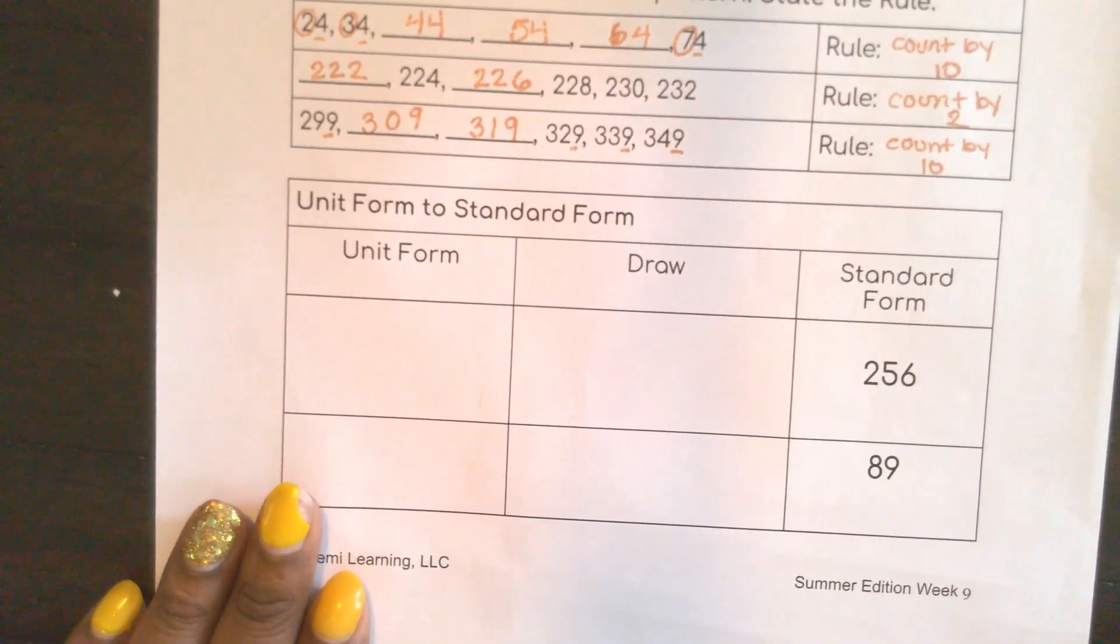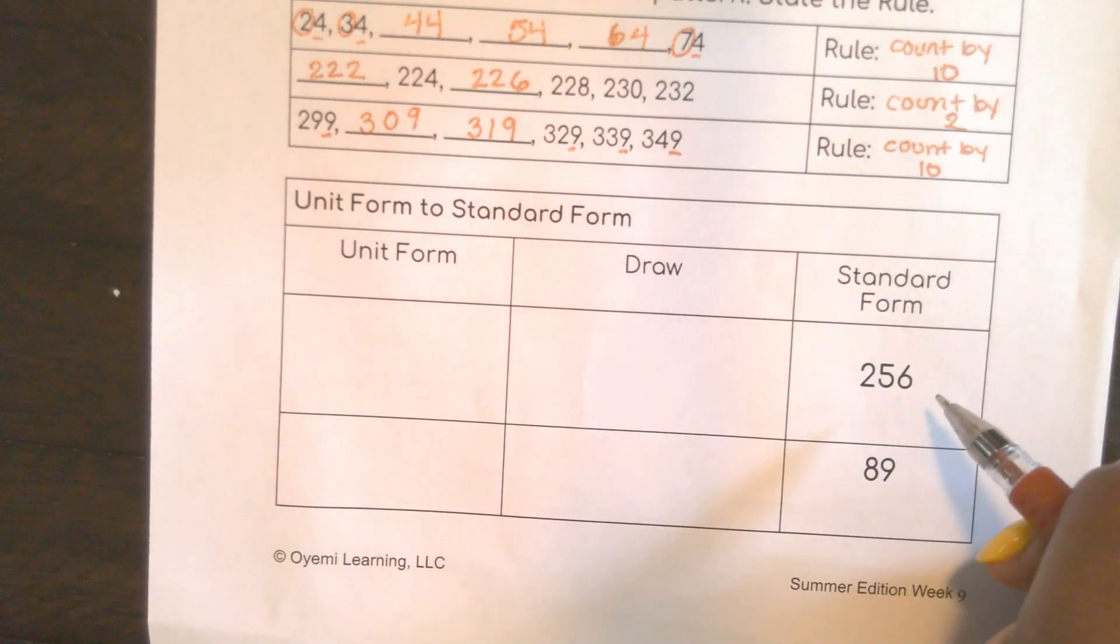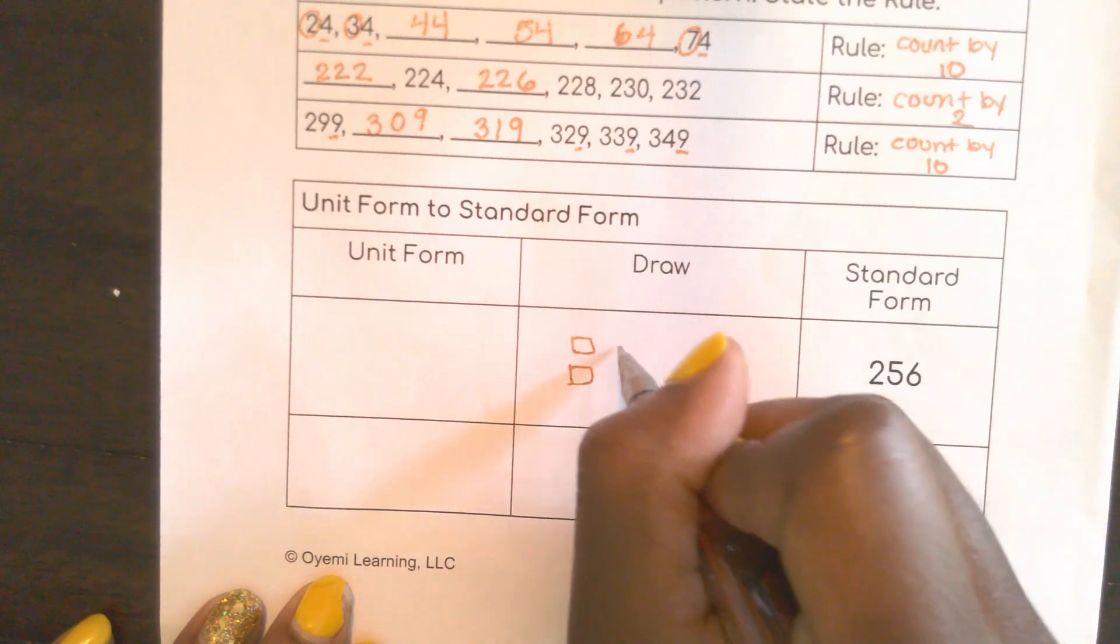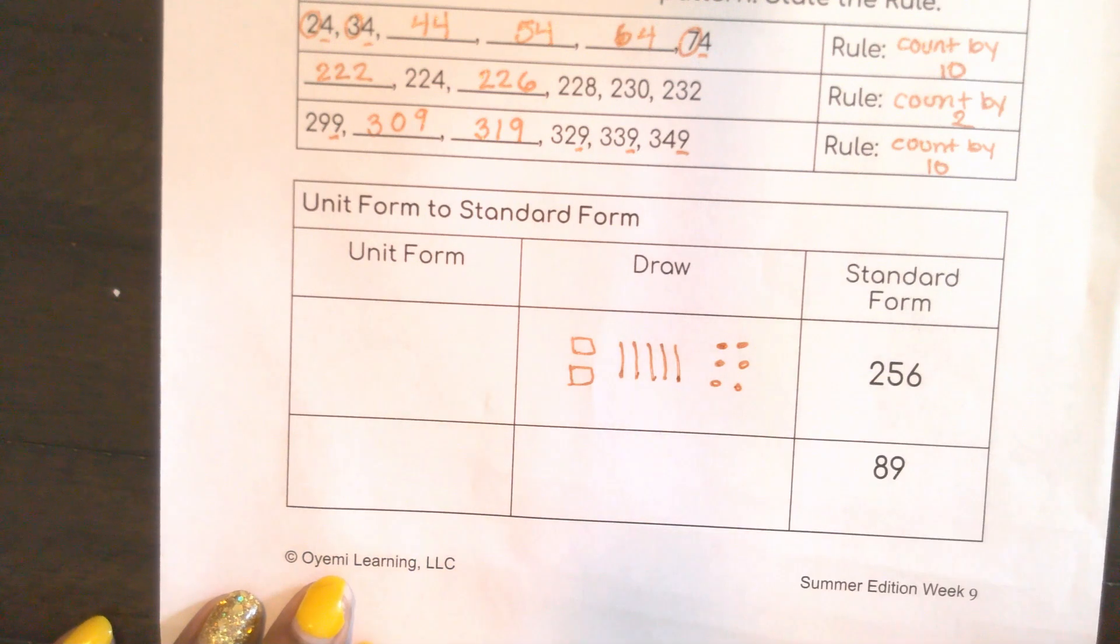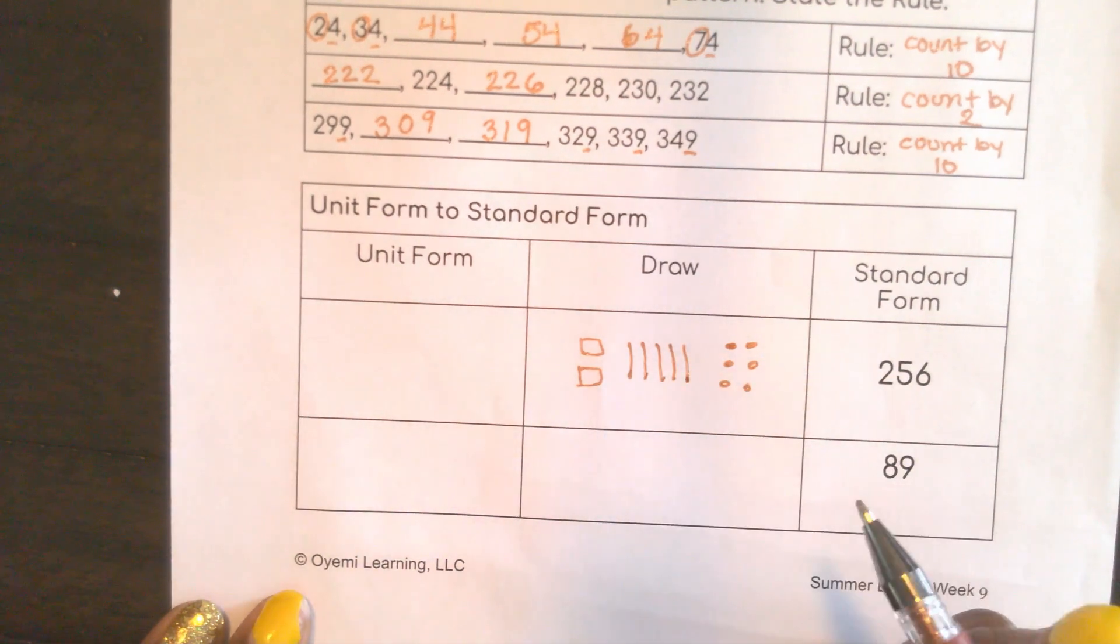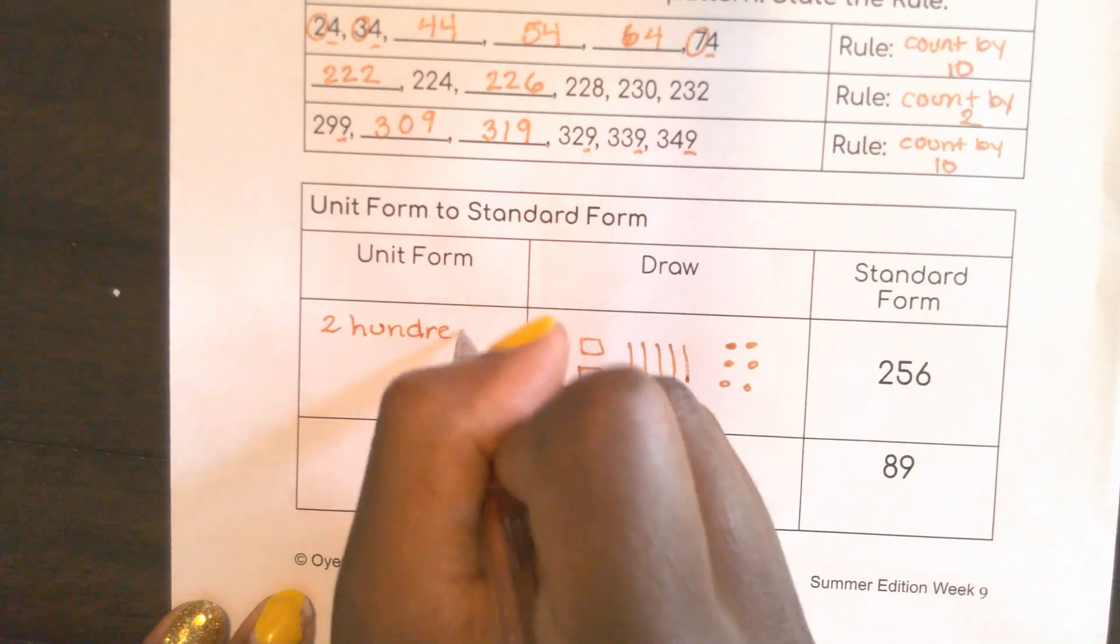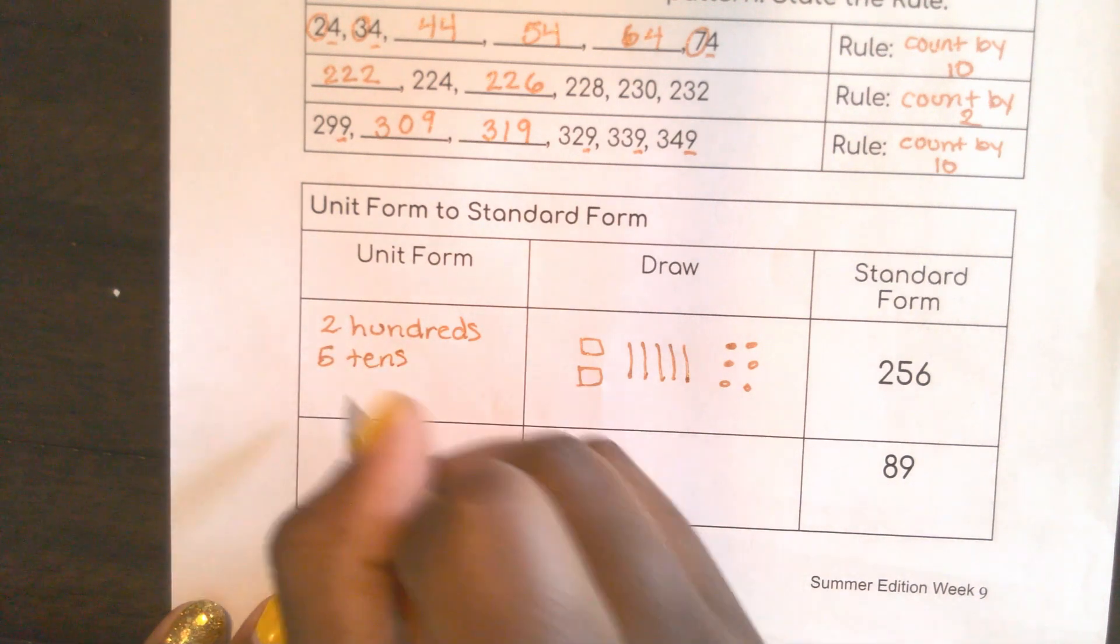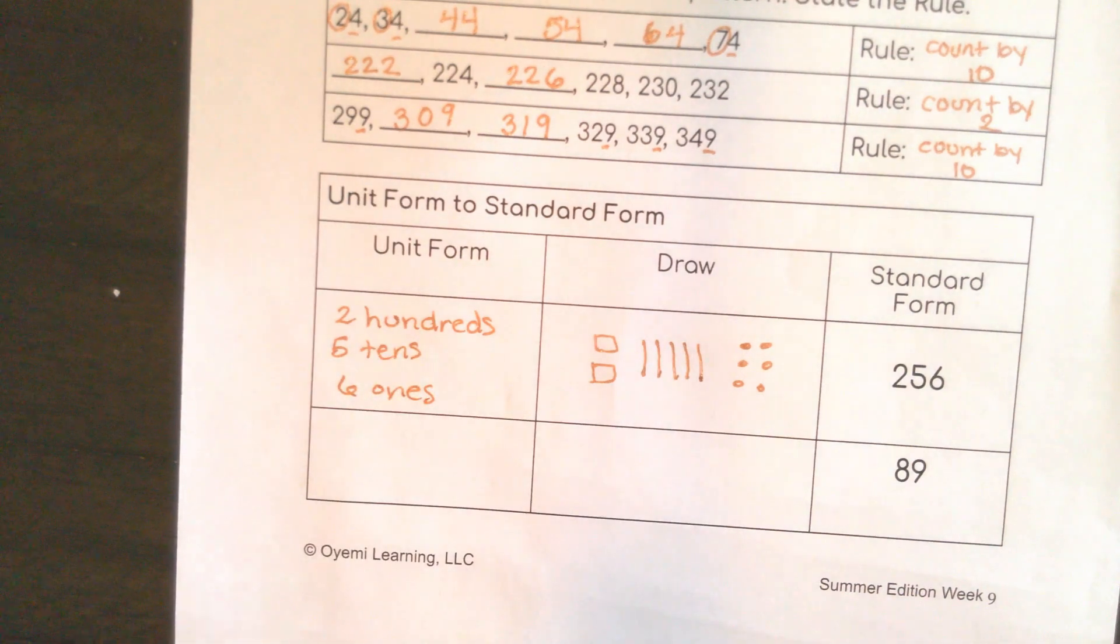Now here we are, we're going from unit form to standard form, but here we already have the standard form, so let's take it back to unit form. So 256: 200, 10, 20, 30, 40, 50, 1, 2, 3, 4, 5, 6. So I could write this as 200, 5 tens, and 6 ones. That's one of the many ways I could have written that.